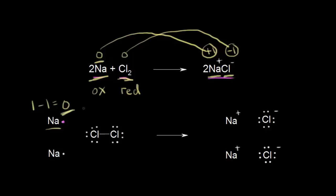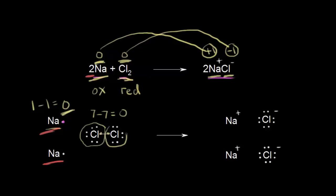Notice that two sodium atoms are drawn here, which reflects the two in the balanced equation. For each chlorine atom in the chlorine molecule, there's a bond consisting of two electrons. When assigning oxidation states from dot structures, you give those electrons to the more electronegative element. Since both atoms are the same element, we give one electron to each atom. Chlorine normally has seven valence electrons, and this chlorine atom has seven electrons around it, so seven minus seven gives an oxidation state equal to zero.